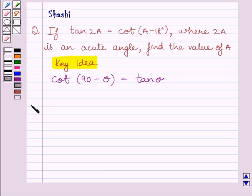Let us now start with the solution. We are given tan 2A is equal to cot A minus 18 degrees. Now, we know 2A is an acute angle, and we also know that tan theta is equal to cot 90 minus theta. Here, the value of theta is equal to 2A. So we can write tan 2A is equal to cot 90 degrees minus 2A.